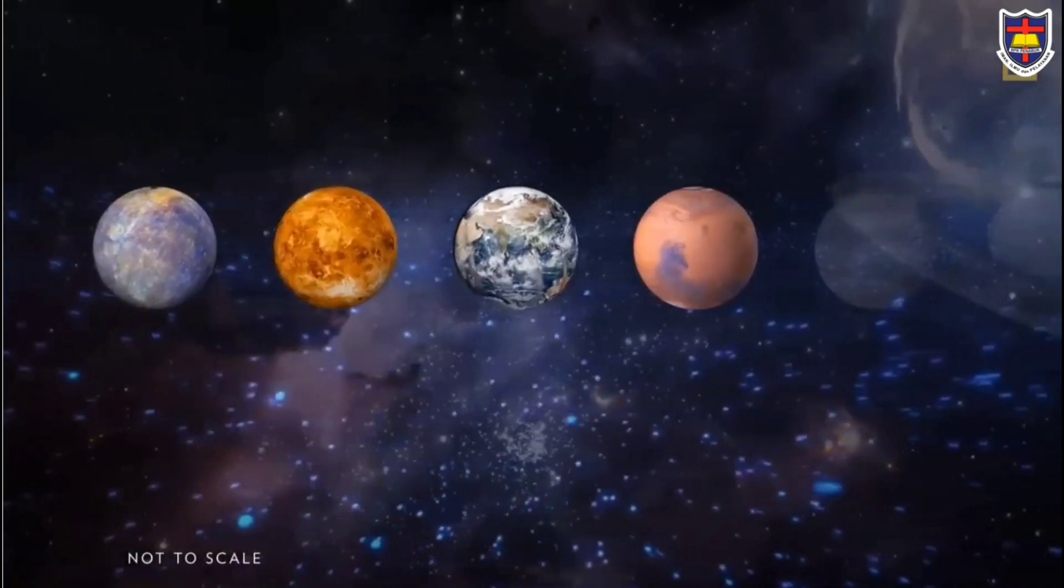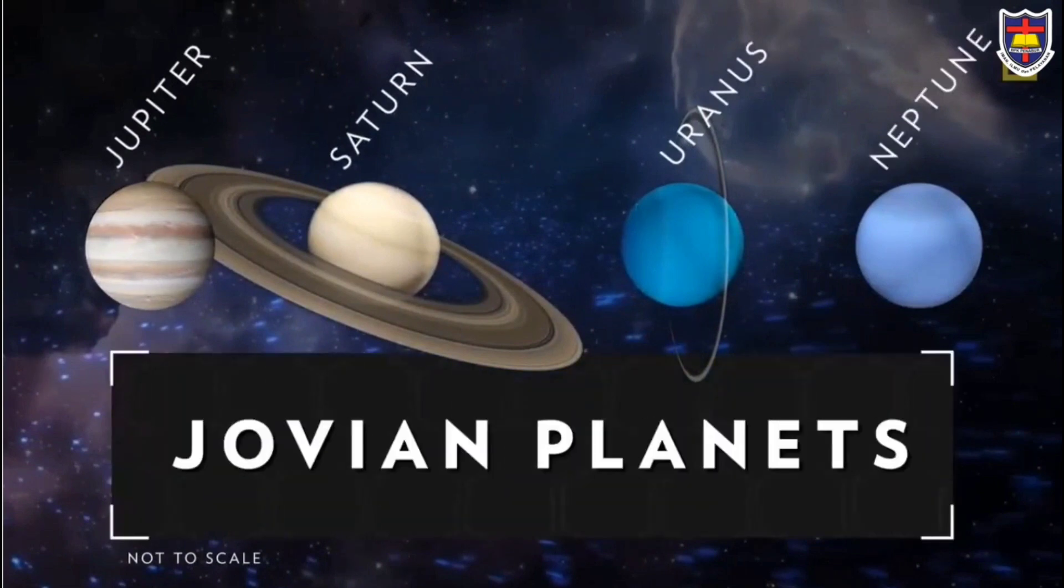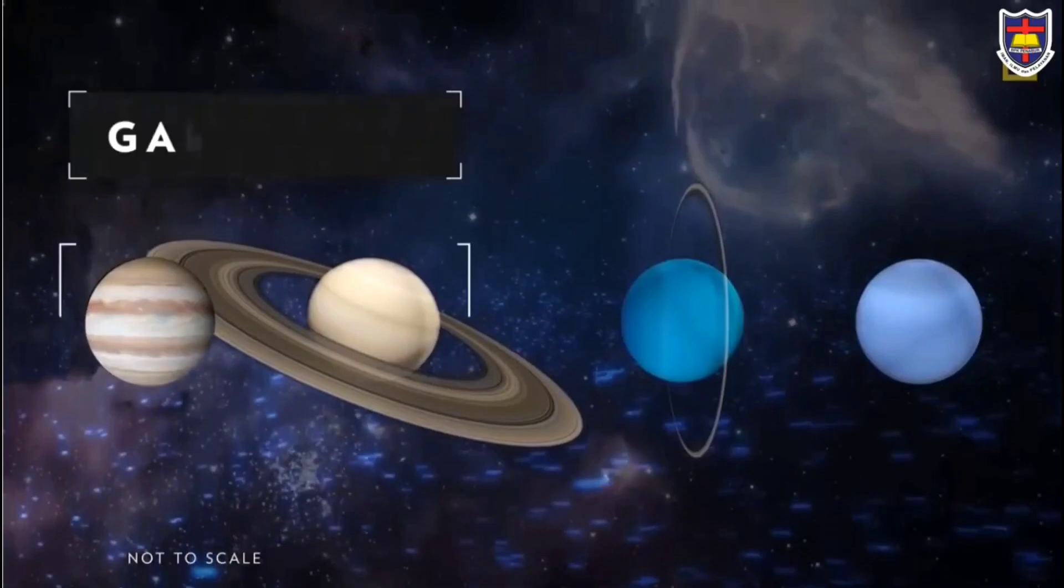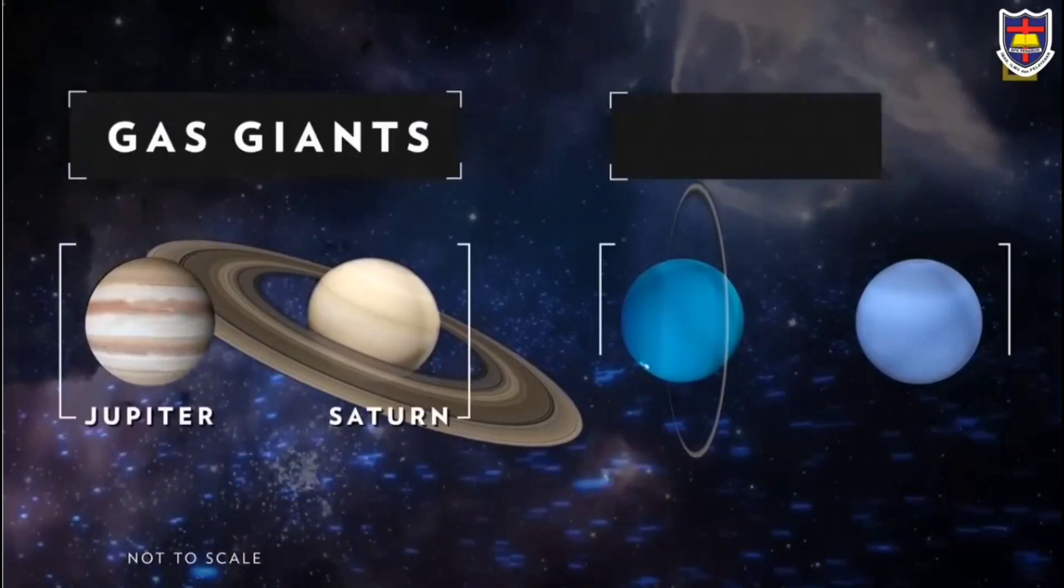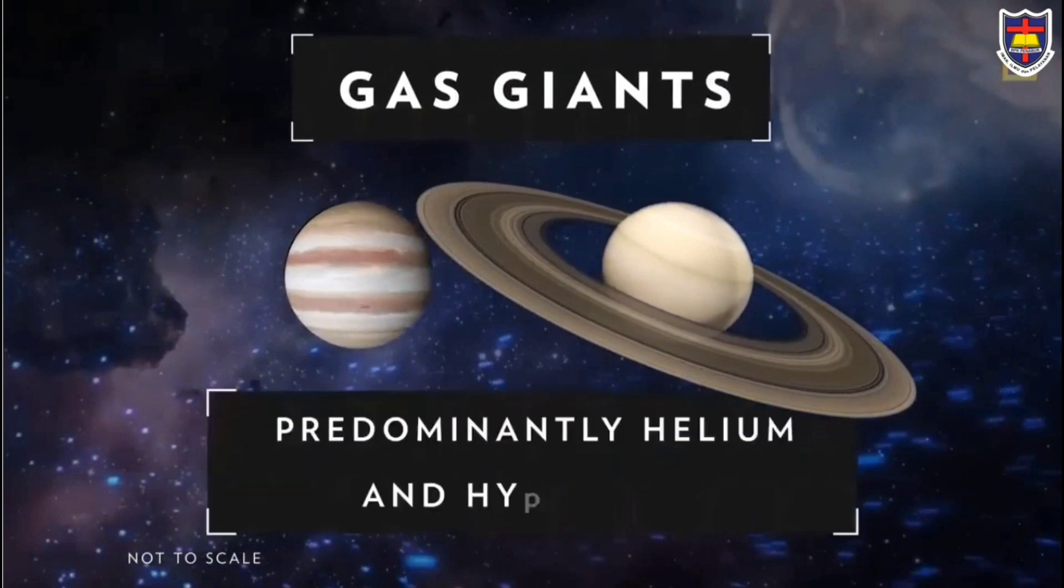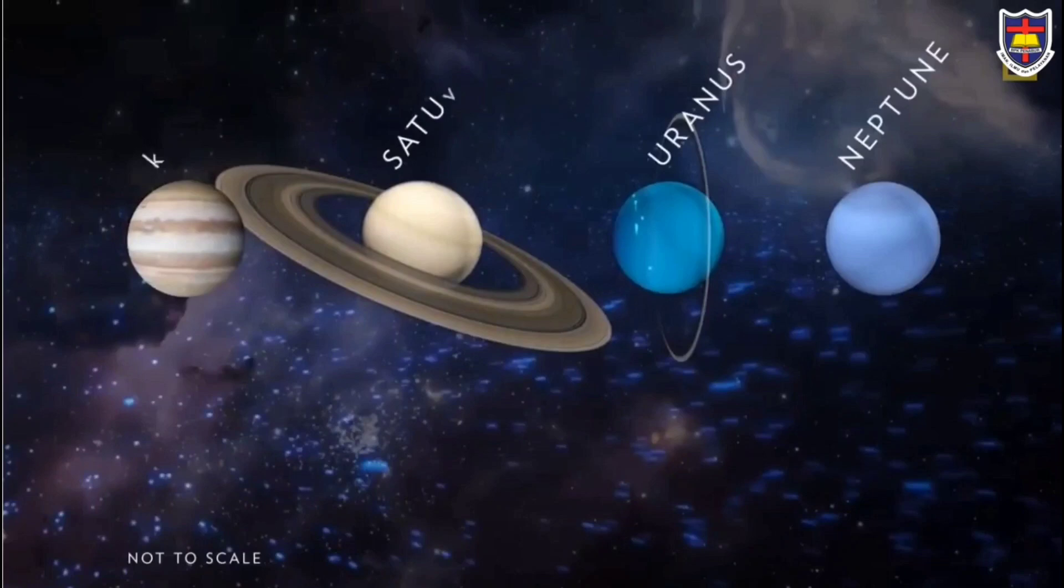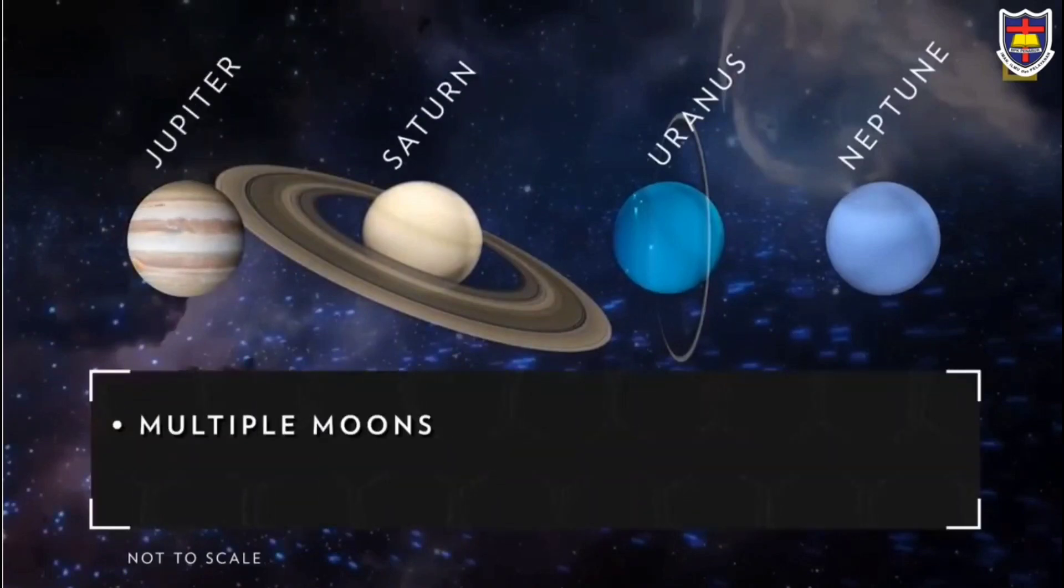The Jovian planets include gas giants Jupiter and Saturn, and ice giants Uranus and Neptune. The gas giants are predominantly made of helium and hydrogen, and the ice giants also contain rock, ice, and a liquid mixture of water, methane, and ammonia. All four Jovian planets have multiple moons, support ring systems, have no solid surface, and are immense.